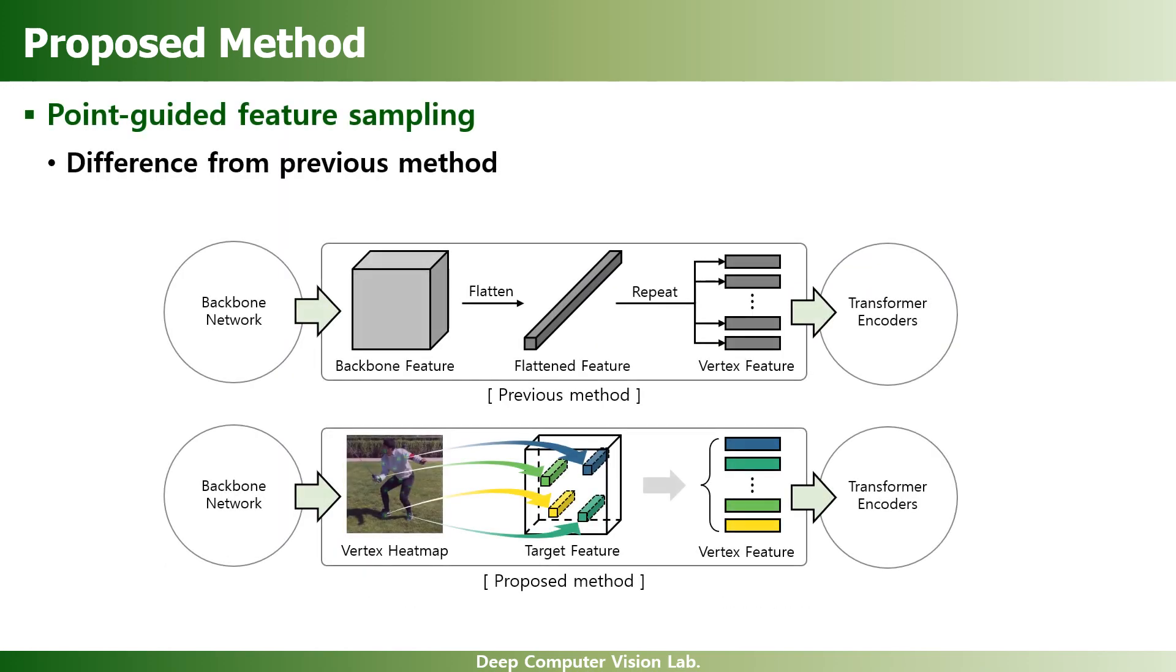Let's take a look at the proposed point-guided feature sampling scheme. In the previous method, the same backbone features are used as all input tokens for the transformer encoder. On the contrary, we extract the features based on the predicted vertex heatmap for vertex tokens.